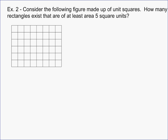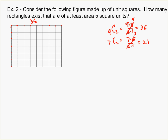This one is a little harder because it might require some extra work. First, let's think about how many total rectangles there are. There are 9 vertical lines, so 9 choose 2 equals 9 times 8 over 2 times 1, which is 36. So there are 36 ways to choose two vertical lines. And there are 7 horizontal lines, so 7 choose 2 equals 7 times 6 over 2 times 1, which gives 21. So the total number of rectangles is 36 times 21, which equals 756.